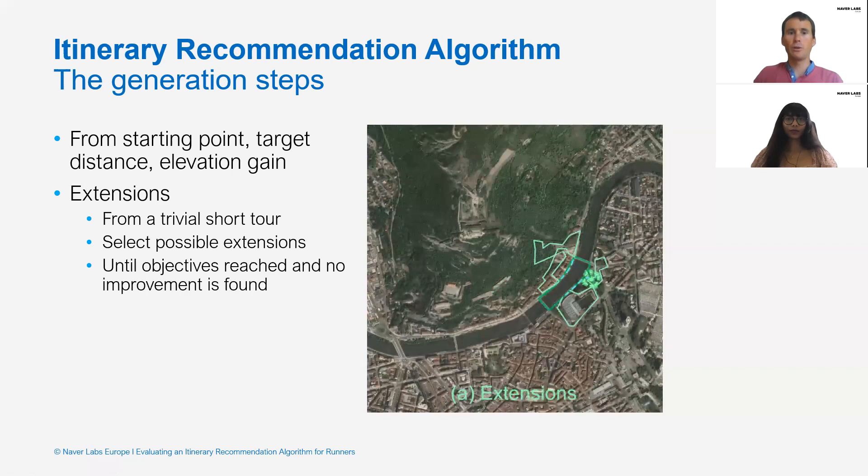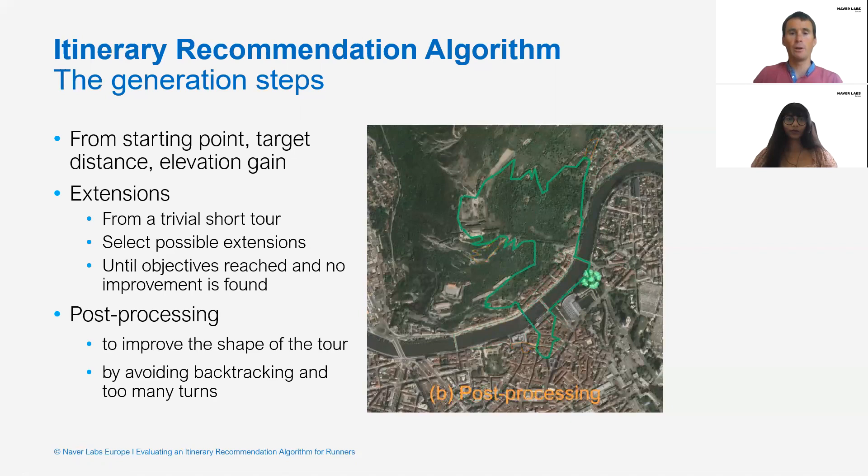First, from a trivial short route, it grows by selecting possible extensions until the objectives are reached and no further improvement is found. Then, it runs a post-processing step to improve the shape of the route by avoiding backtracking or unnecessary turns.